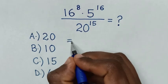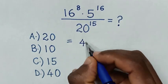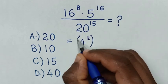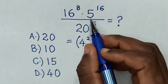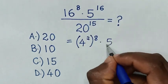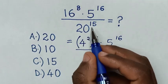So it will be equal to, from here 16 is same as 4 square, then bracket power of 8 times 5 power of 16, then over this 20 power of 15.